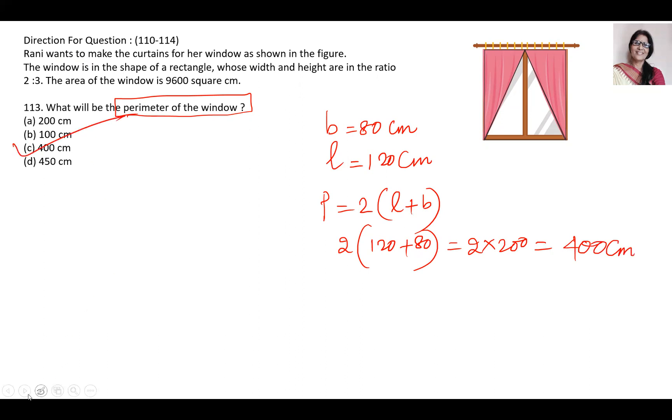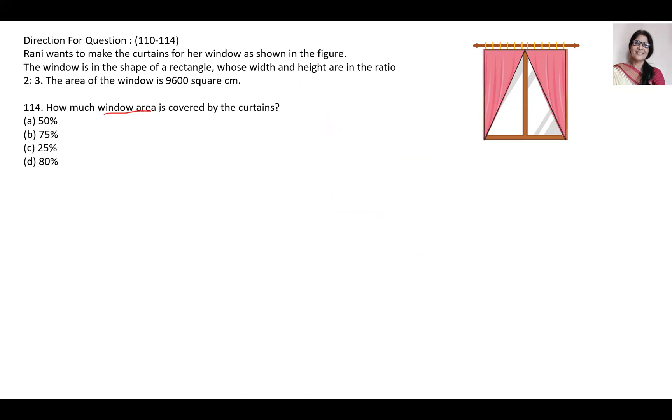How much window area is covered by the curtains? This question is how much area is covered by the curtains. This is very simple, without calculating you can say - you will see ABCD, this is a rectangle, and this red triangle, this curtain, is half of area of this. Similarly this side is half of the total rectangle. So if the window is 100 percent then the area of curtain...